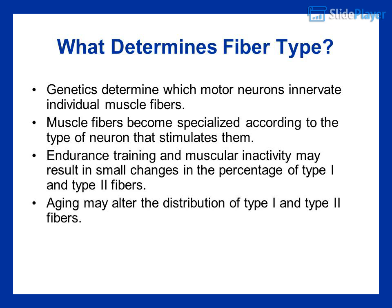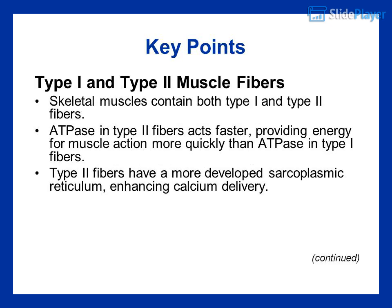What determines fiber type: genetics determine which motor neurons innervate individual muscle fibers. Muscle fibers become specialized according to the type of neuron that stimulates them. Endurance training and muscular inactivity may result in small changes in the percentage of type I and type II fibers. Aging may also alter the distribution of type I and type II fibers.